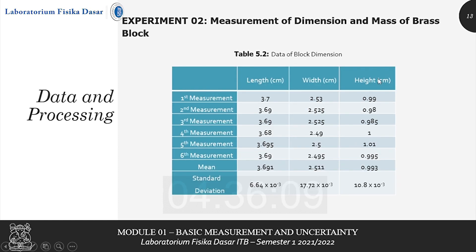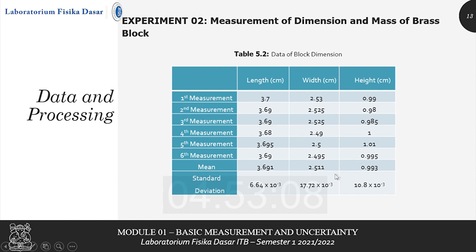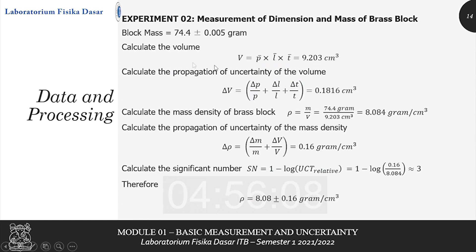Experiment 2 is the measurement of dimensions and mass of the brass block. Write down the results of the six measurements of the length, width, and height of the block in the following table. Then, calculate the average and standard deviation for each dimension. Calculate the volume and the propagation of uncertainty of the volume. Next, calculate the mass density of the brass block and the propagation of uncertainty of the mass density. Don't forget to calculate the significant number so that we can write down the result.